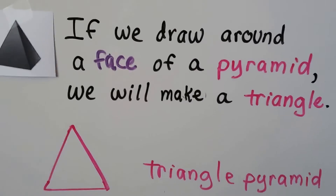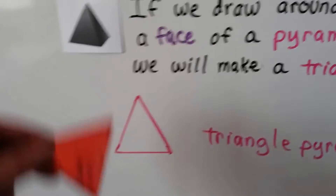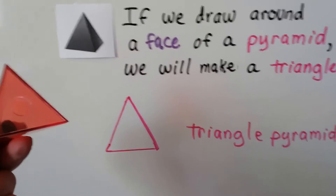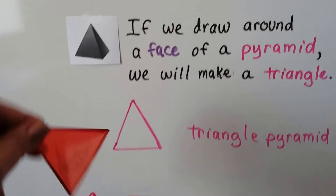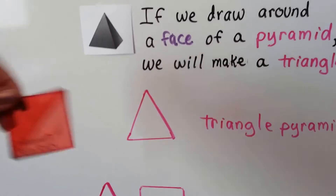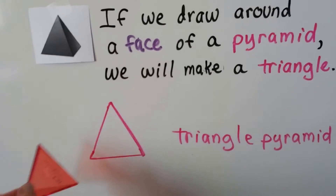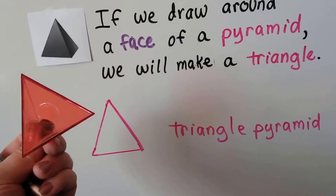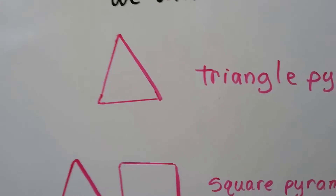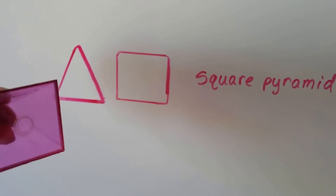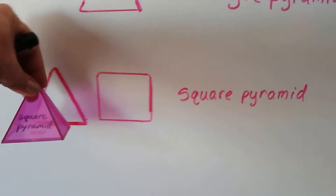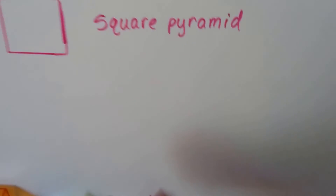If we draw around a face of a pyramid, we'll make a triangle. A triangular pyramid — one with a triangle bottom — is going to have four faces: the three around the sides and the one on the bottom. If I trace around any of them, I'm going to make a triangle. There's also a square pyramid with a square bottom and four sides. I could trace its side face and make a triangle, or trace its bottom and make a square. So there's a triangle pyramid with a triangle bottom and a square pyramid with a square bottom.